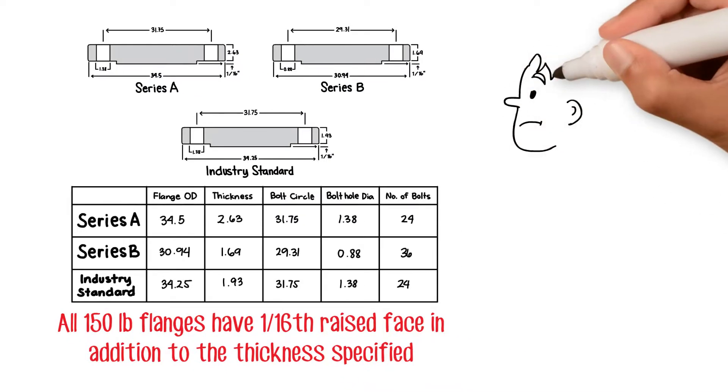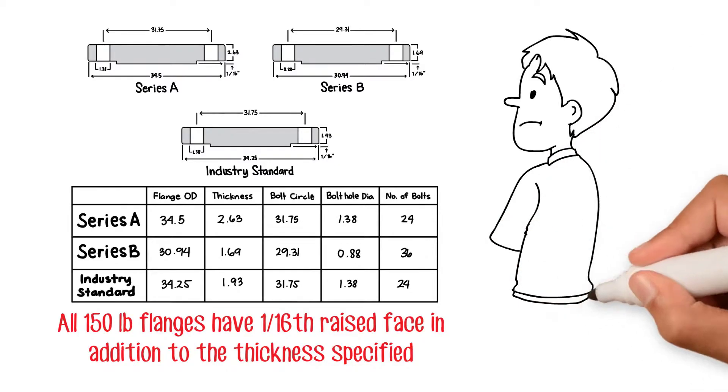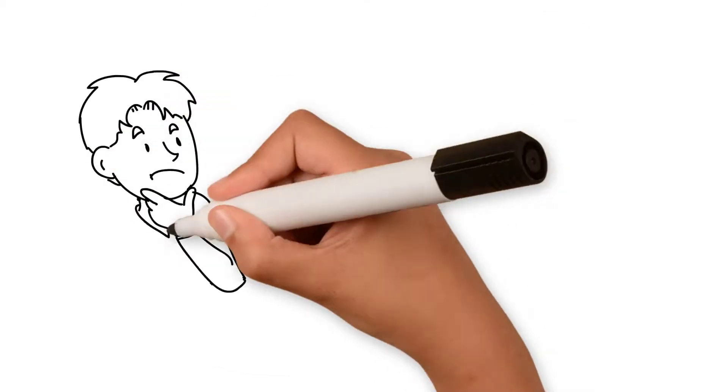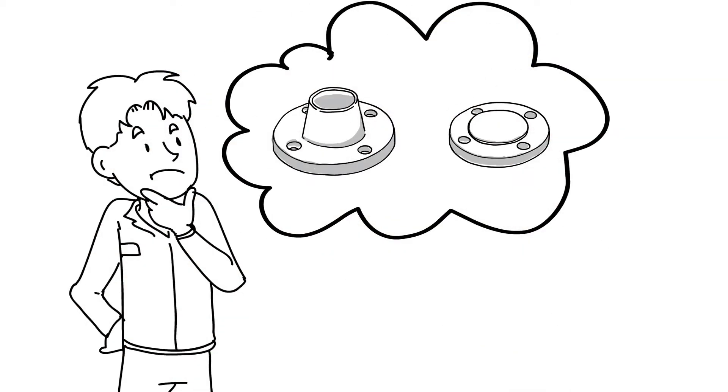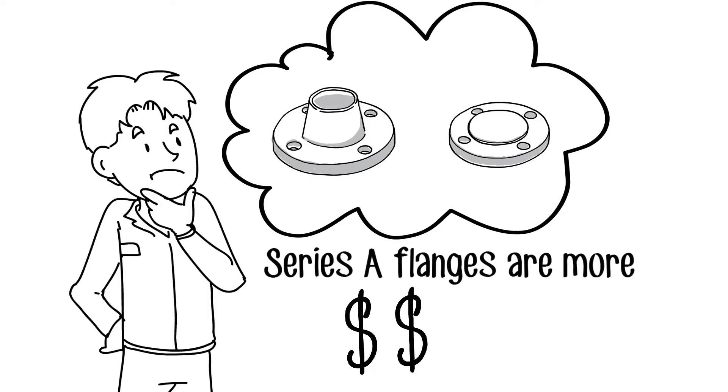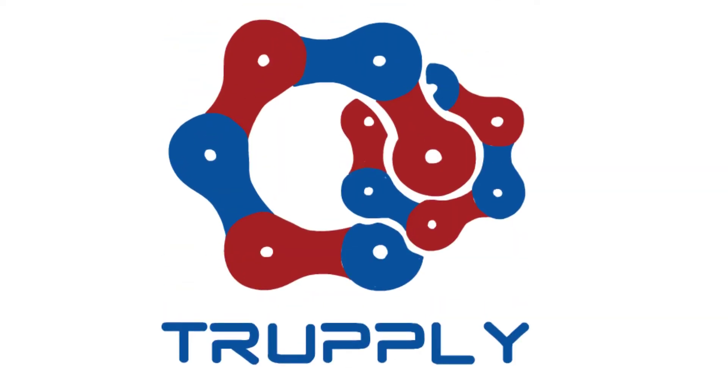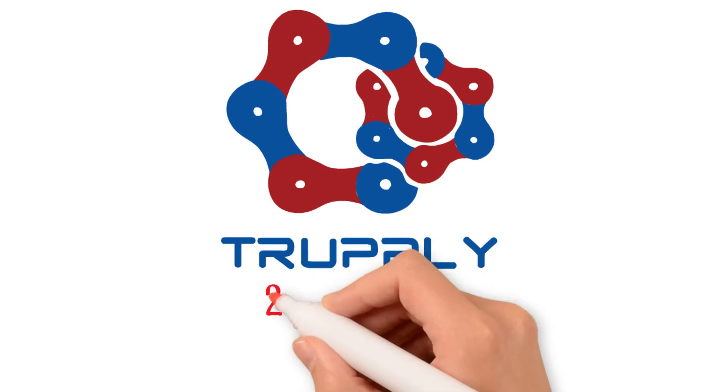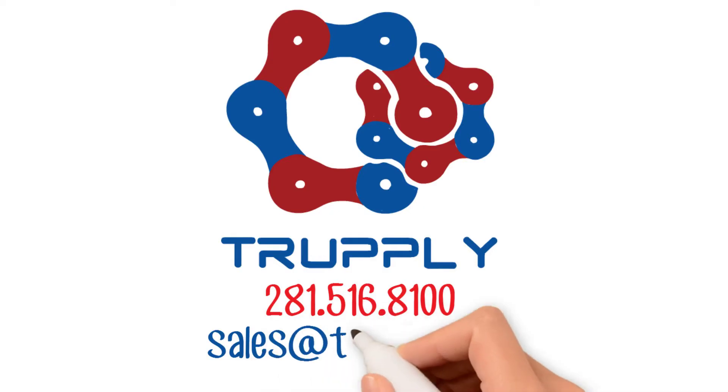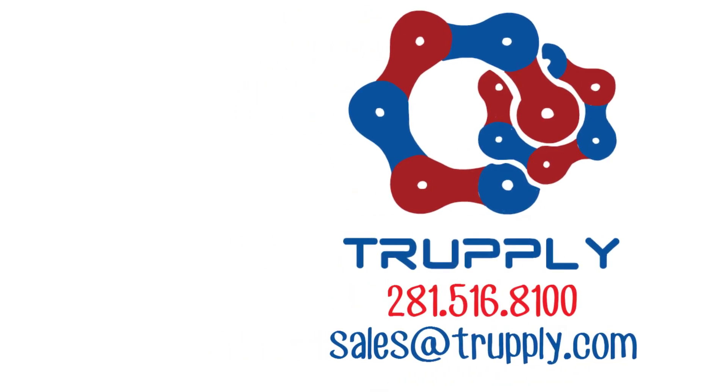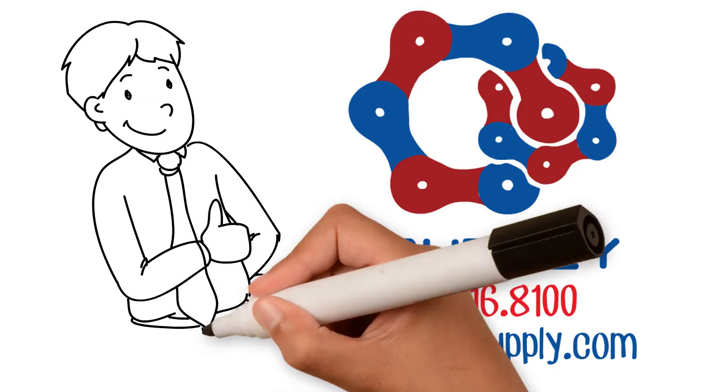Most piping users or designers may choose Series A or industry standard flanges for new pipeline or equipment. But if you're doing refurbishment or replacement, Series B flanges are more popular. Price-wise, Series A flanges are more expensive, followed by industry standard flange and then Series B flanges. Still not sure which flange you need? Call us at 281-516-8100 or email sales at trapply.com, and one of our flange experts will guide you through different options.